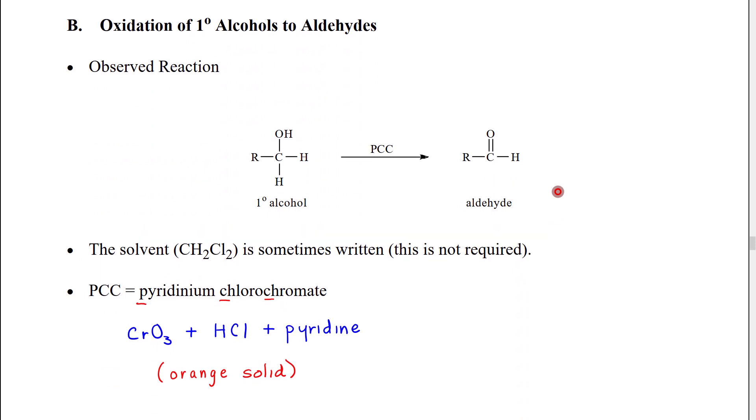The next reaction we're going to look at is the oxidation reaction of primary alcohols to aldehydes. Our observed reaction looks like this. We start with a primary alcohol. A primary alcohol is going to have only one carbon group attached to the alcohol carbon, the carbon directly bonded to the hydroxyl group.